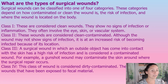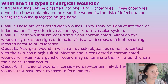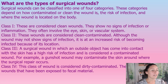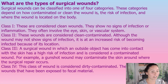Class two wounds are considered clean-contaminated. Although the wound might not be showing signs of infection, it is at an increased risk of becoming infected because of its location — for example, if it's close to the rectum. Class three is a surgical wound in which an outside object has come in contact with the skin and has a high risk of infection — it is considered a contaminated wound.